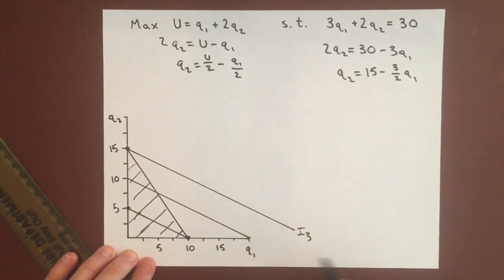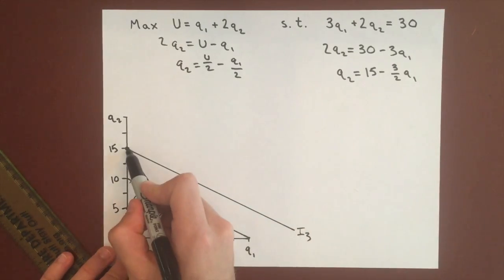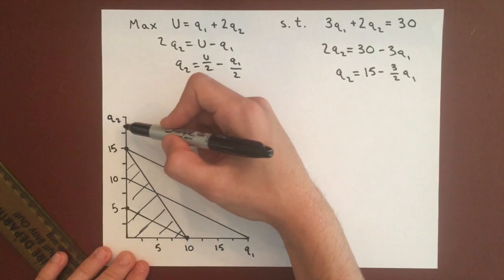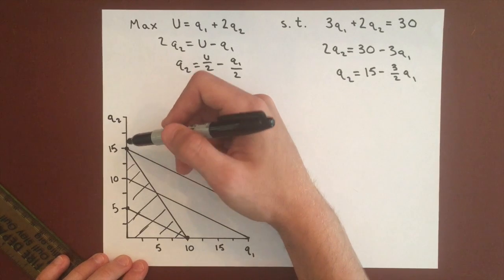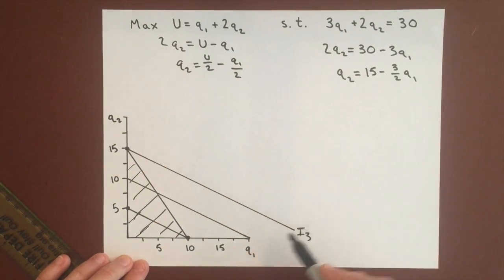even though it goes off of the x-axis, it touches the budget constraint at this point (0, 15). So if we buy 15 units of Q2, we can reach this third indifference curve, which is higher than the second or first indifference curve we've drawn.